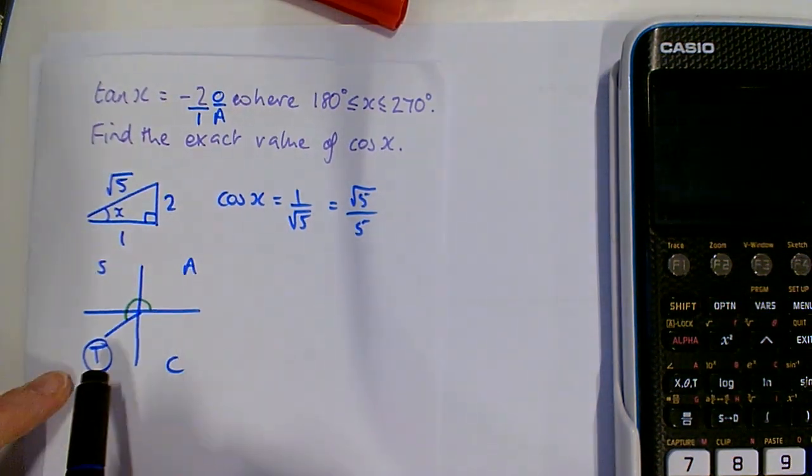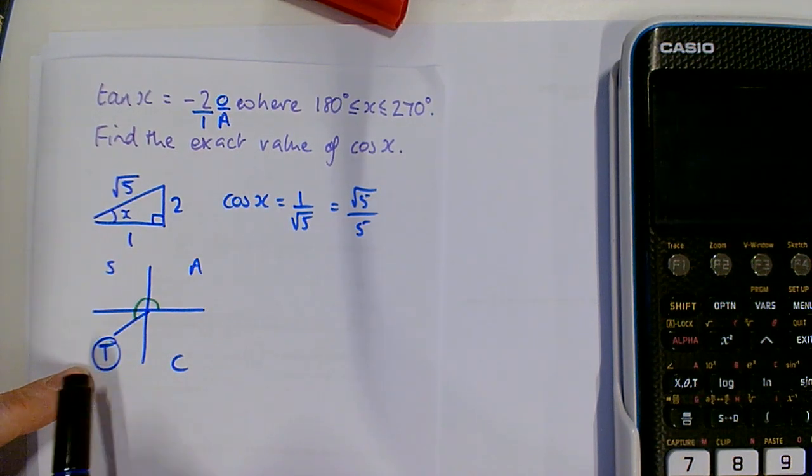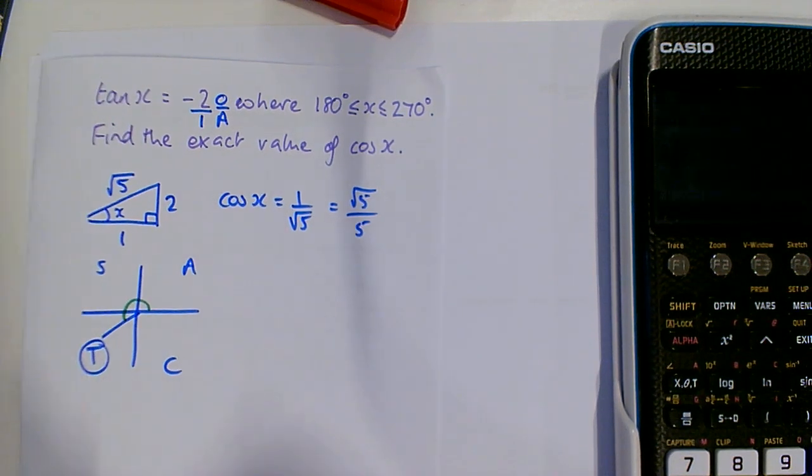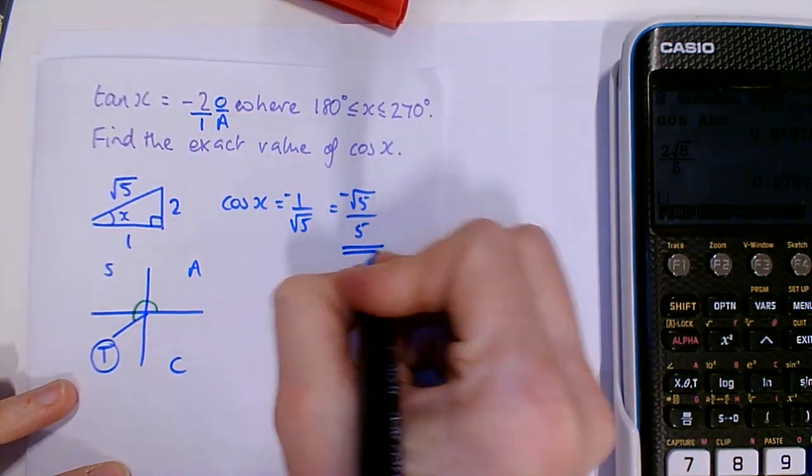Now what we need to know from that is, is cos positive or negative in this quadrant? Well, only tan is positive, so cos would be negative. And that's it.